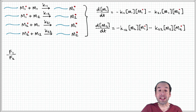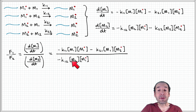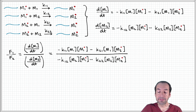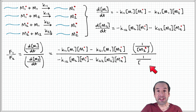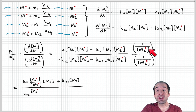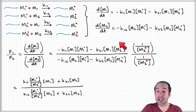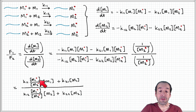Now we can substitute these rate expressions into the ratio of mole fractions F1/F2, as shown here. The next step is mathematical simplification: we divide the numerator and denominator by the concentration of active chains ending in monomer 2. When we do that, the M2• terms cancel for two of the terms, and in the remaining terms we are left with the ratio M1•/M2•.